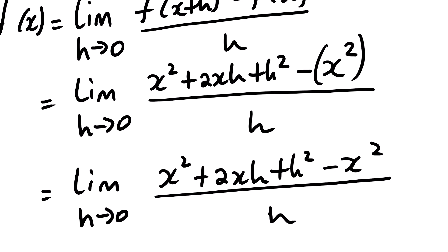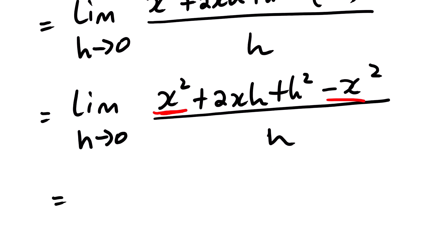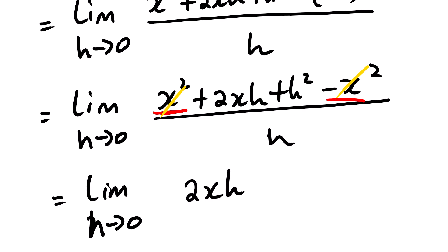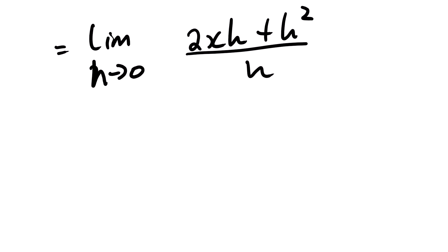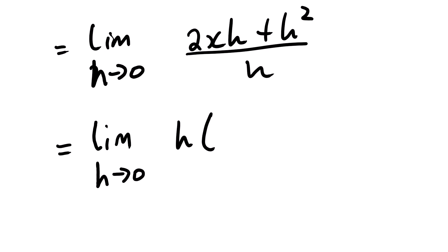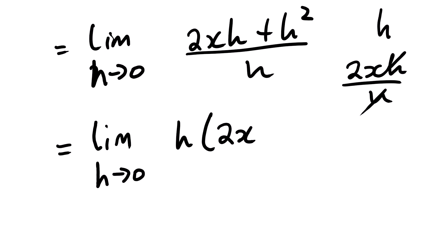Looking at like terms, x squared minus x squared cancel each other out. We are left with 2xh plus h squared, all over h. From here we factorize — the common factor is h. Factoring out h: 2xh divided by h leaves 2x, and h squared divided by h leaves h. So we have h times the quantity 2x plus h, all over h.